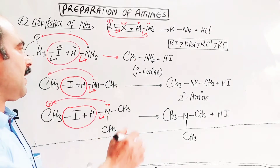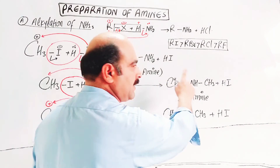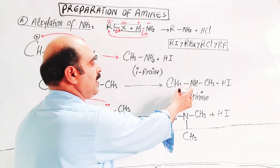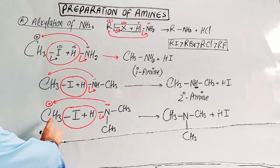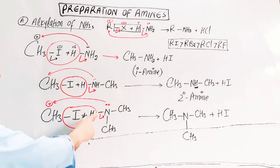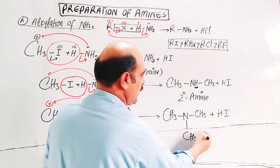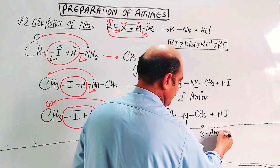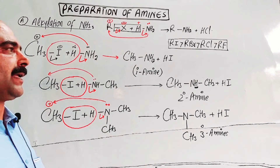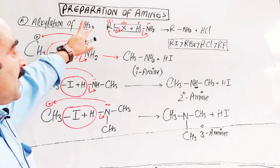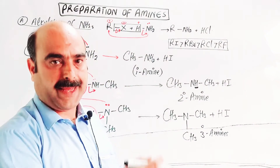One-degree amine is formed first. Then it is converted further. The same alkyl halide reacts with the one-degree amine to form a two-degree secondary amine, because secondary amine still has one replaceable hydrogen. The alkyl halide reacts again — the hydrogen is removed in the form of a hydrogen ion and the alkyl group attaches — forming a three-degree (tertiary) amine. This was all about the alkylation of ammonia.